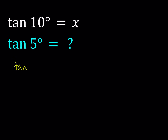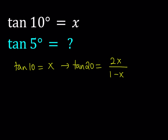Since tangent 10 is equal to x, by using the double angle formula I can find tangent 20. Tangent 20 means tangent 20 degrees. By using the double angle formula, this is 2x over 1 minus x squared. That is the double angle formula for tangent.